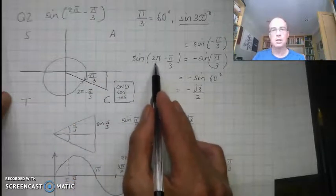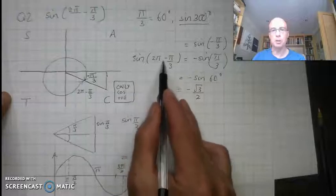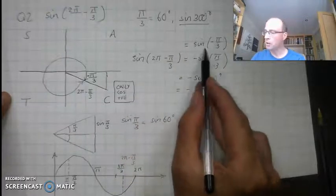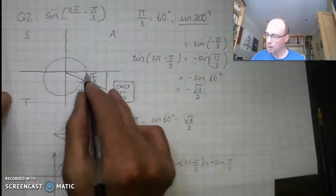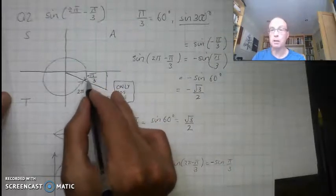So sine of 2π minus π/3, so my sine of 300, is either the same as sine of minus π/3, this bit here, which is the same as my minus 60 degrees.